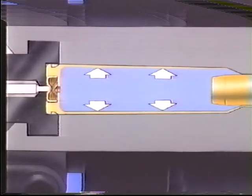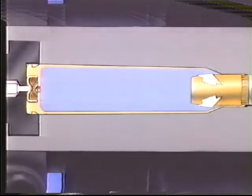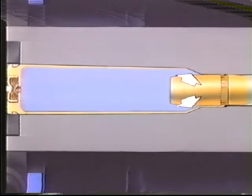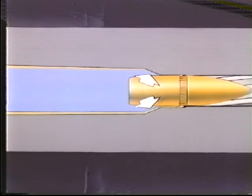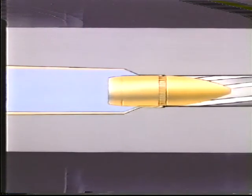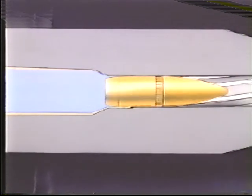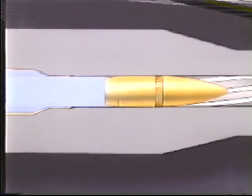Chamber pressure expands the case body and the case shoulder against the chamber, providing rearward obturation. Forward resistance is initially high while the bullet is being engraved by the rifling.